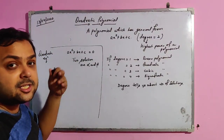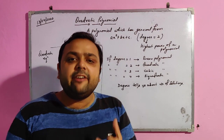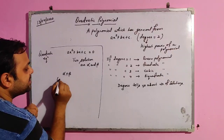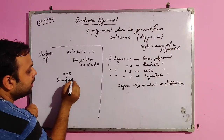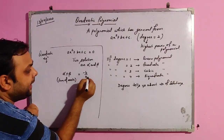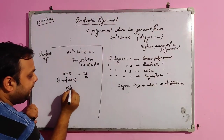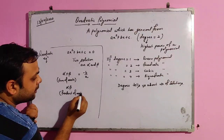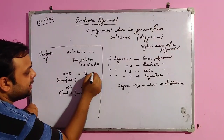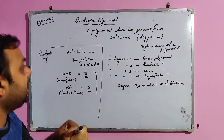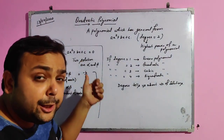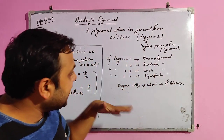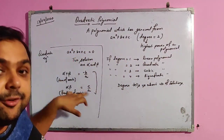Alpha and beta are the roots, solutions, and zeros of the quadratic polynomial. We have a relationship between them: alpha plus beta — the sum of roots — equals −b/a. Alpha times beta — the product of roots — equals c/a. These are the relationships between the roots of the quadratic polynomial and the coefficients a, b, and c.